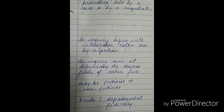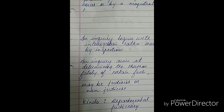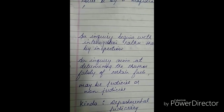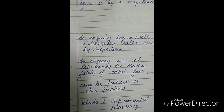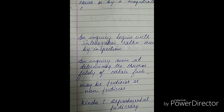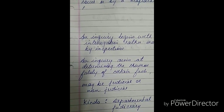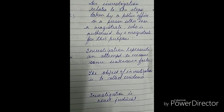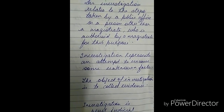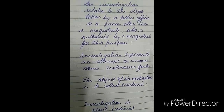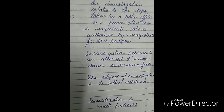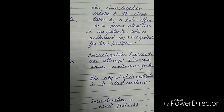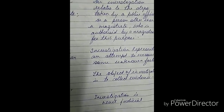An inquiry aims at determining the truth or falsity of certain facts. The basic purpose of inquiry is to establish truth or falsity. The object of investigation, on the other hand, is to collect evidence — we collect the evidence and then assess how much of it is true.